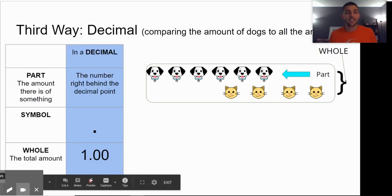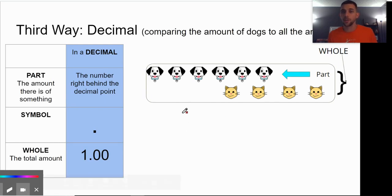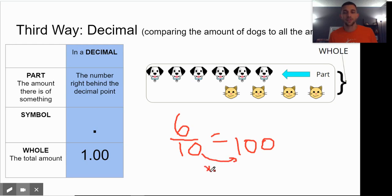If I were to write this as a decimal, I need to do a little bit of math. As a fraction, we said this was six dogs out of 10 total animals. And remember, the decimal is going to be in the hundredths place. So if I'm going to the hundredths place, this would be 10 times 10 is 100. So I do six times 10, because my arrows are going the same direction.